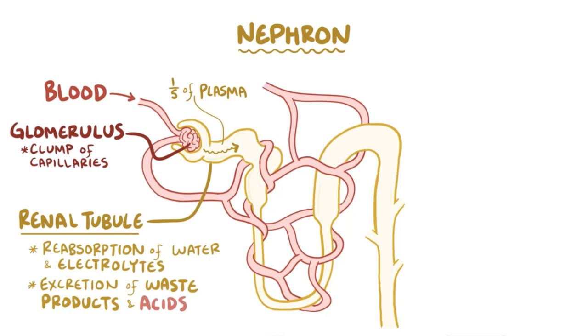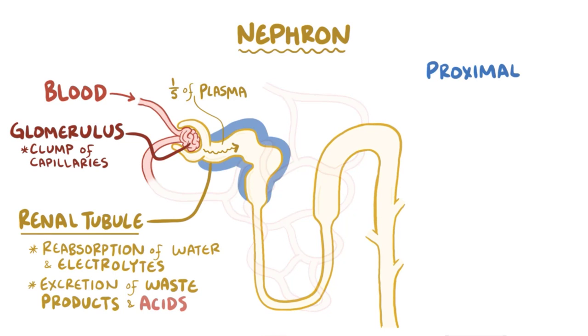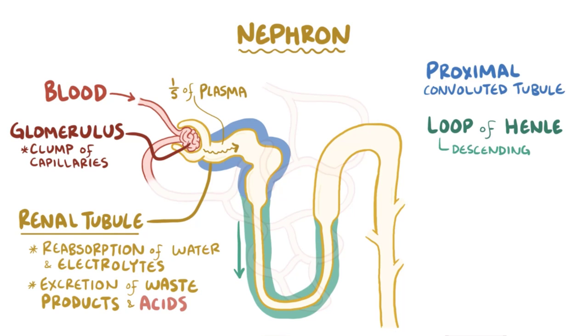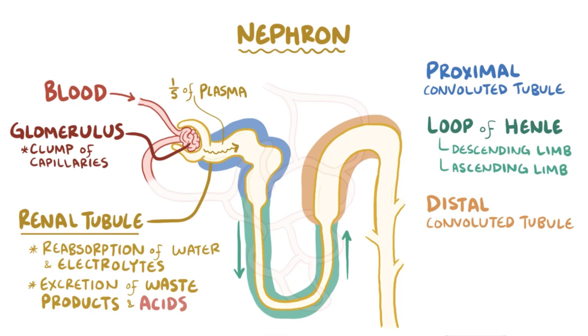The renal tubule is a structure with several segments: the proximal convoluted tubule, the U-shaped loop of Henle with a thin descending limb and a thick ascending limb, and the distal convoluted tubule, which goes back up again before emptying into the collecting duct, which collects the final urine.